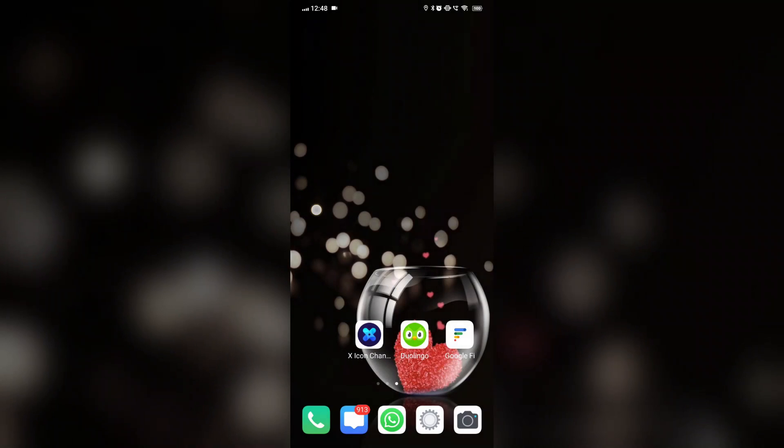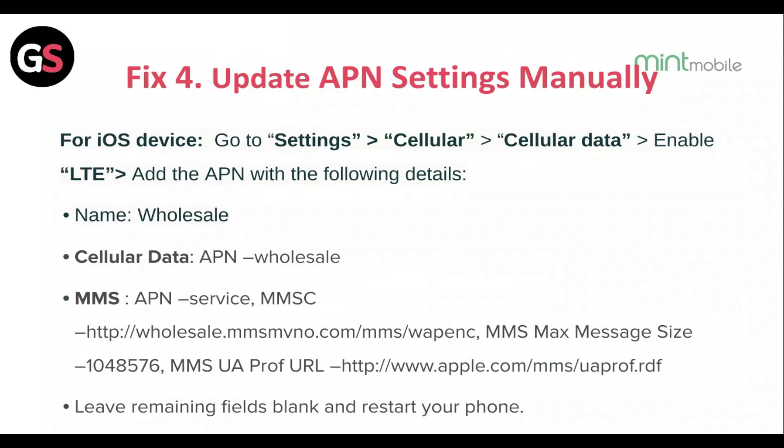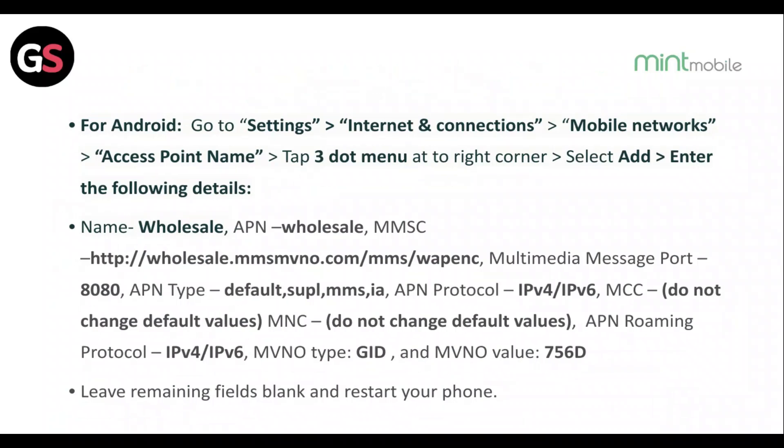Fix 4: Update APN settings manually. For iOS, go to Settings, then Cellular, then Cellular Data, and enable LTE. Add the APN with the required details, leave the remaining fields blank, and restart your phone.